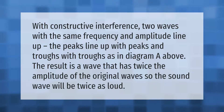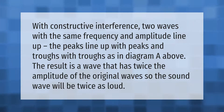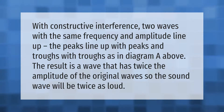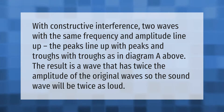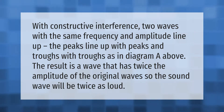With constructive interference, two waves with the same frequency and amplitude line up — peaks align with peaks and troughs with troughs, as shown in the diagram. The result is a wave that has twice the amplitude of the original waves, so the sound will be twice as loud.